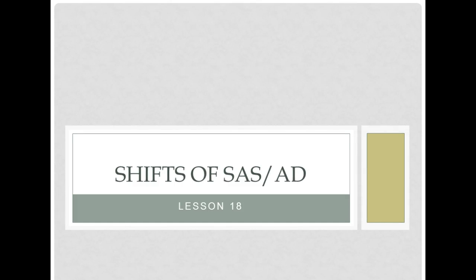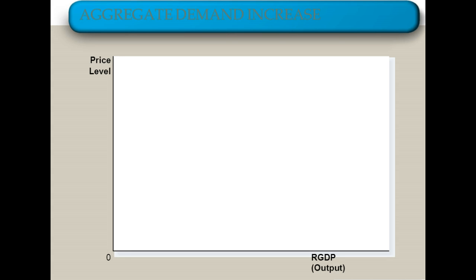We're going to continue along with this module by talking about what causes a change or a shift in the short run aggregate supply curve and the aggregate demand curve. In the last unit we began looking at what the aggregate market actually was. As a review, we mark the y-axis with the price level and the x-axis with the RGDP, or the amount of output that our economy produces.